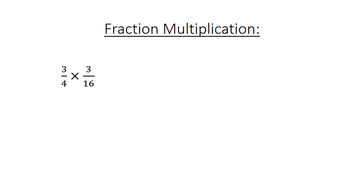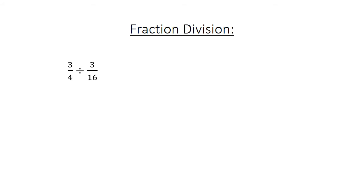Fraction multiplication. 3 over 4 times 3 over 16 equals 9 over 64. Fraction division. 3 over 4 divided by 3 over 16 equals 3 over 4 times 16 over 3 equals 48 divided by 12, which equals 4.